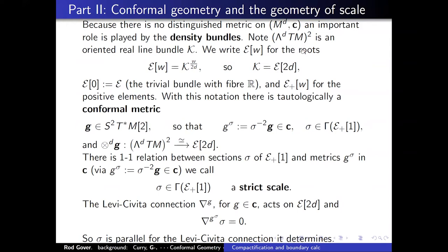How do you construct density bundles? We're in dimension D, so the tangent bundle TM has rank D. Its top exterior power, wedge-D of TM, has rank one — it's a line bundle. If you square that line bundle (take its tensor product with itself), you get an oriented real line bundle, call it curly-K. Because it's oriented, you can take roots easily, just as you take roots of positive numbers. These are line bundles that are roots of that canonical bundle — the convention for weights — and the trivial bundle of functions has weight zero. We put a plus for positive elements.